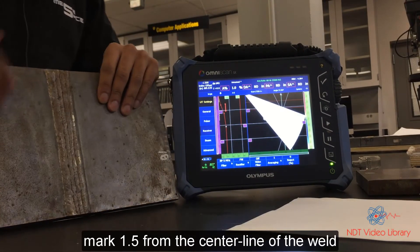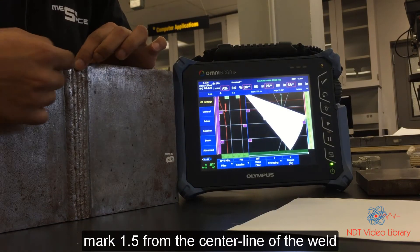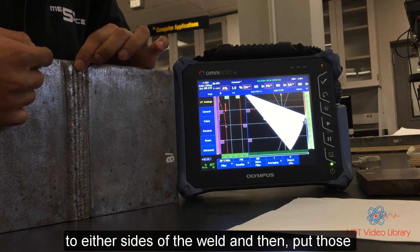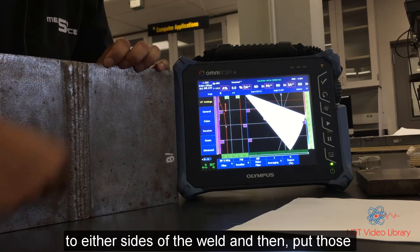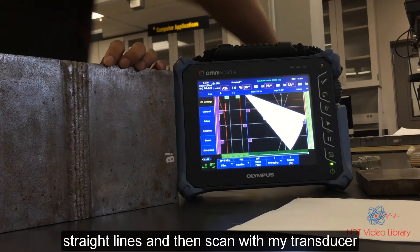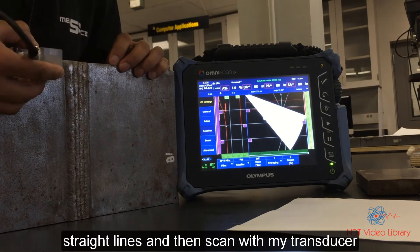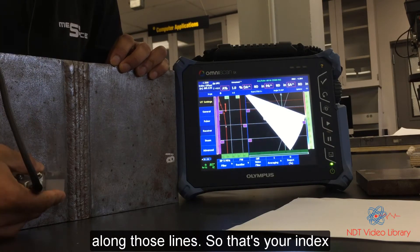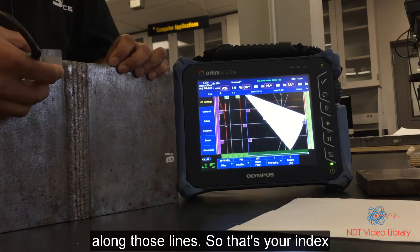So I'm going to mark 1.5 from the center line of the weld to either sides of the weld and then put those straight lines and then scan with my transducer along those lines. So that's your index offset.